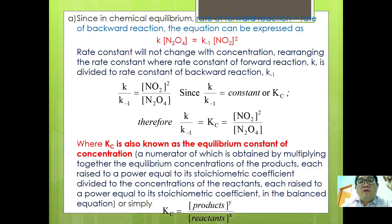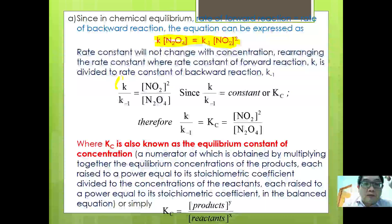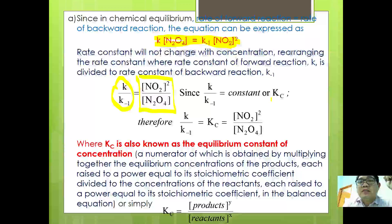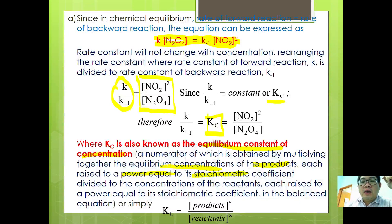When the rate of forward and backward reaction is the same, rearranging gives K[N2O4] = K₋₁[NO2]². Since rate constants don't change with concentration, rearranging the rate constants together gives K/K₋₁ = [NO2]²/[N2O4]. Since constants over constants is another new constant, this new constant is called Kc, where Kc = [NO2]²/[N2O4]. Kc is the equilibrium constant of concentration — the numerator is the product of equilibrium concentrations of products each raised to the power of their stoichiometric coefficient, divided by concentrations of reactants each raised to their stoichiometric coefficient. Simply, Kc = [products]^y / [reactants]^x.